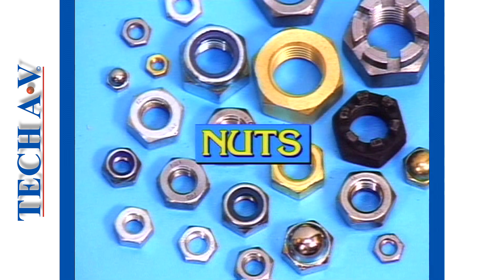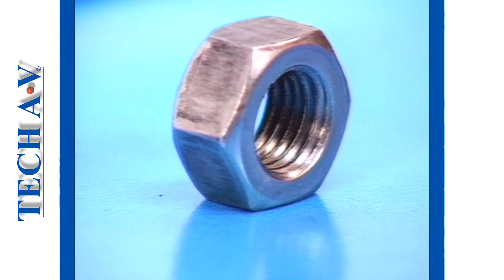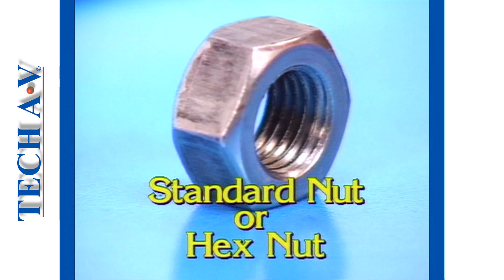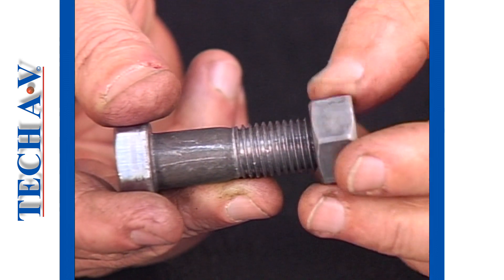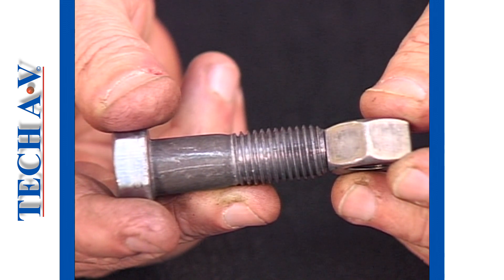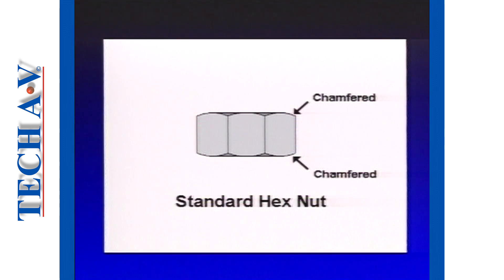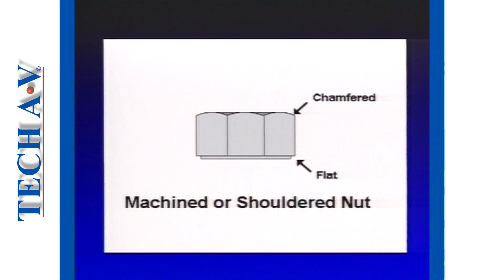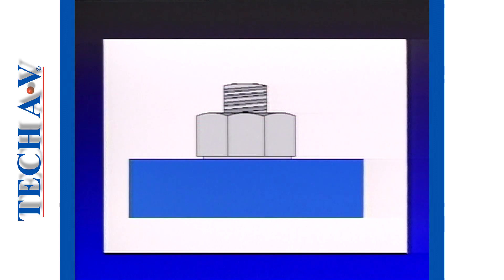No discussion on fasteners would be complete without considering some of the types of nuts we will come across. The most basic form of nut is the standard nut, or hex nut. The size or thickness of a standard nut is approximately that of the bolt threaded diameter. If one looks carefully at a standard hex nut, you will notice that it is chamfered on both its outer edges. By comparison, this machined nut is chamfered only on one edge — the opposite side has been machined flat. Another name for this type is a shoulder nut. A machined nut may only be fitted such that the machined face is against the surface being secured.